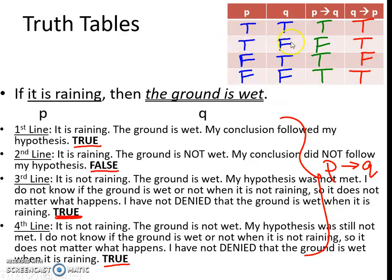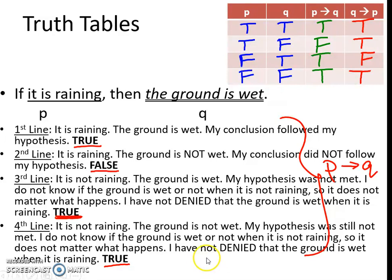You always start with T, T, T, F, F, T, F, F — this is how you start every time with P and Q, and this part will never change. The next two examples we're going to do in class, so you can pause your notes here. I want to explain as we do this because it gets a little complicated and overwhelming. So pause the video here — thank you for watching, and we'll practice more in class.